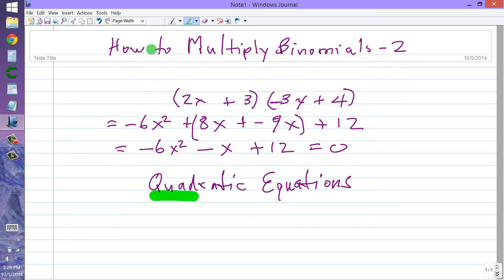2x plus 3 equals zero. And minus 3x plus 4 equals zero.